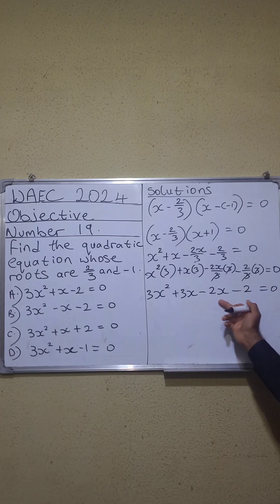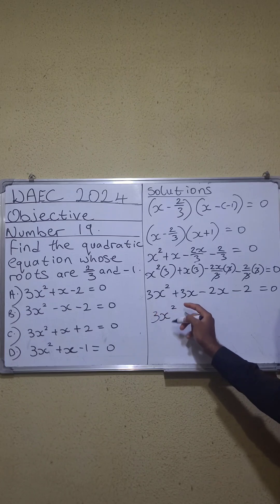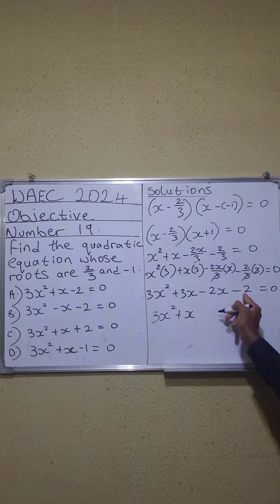Now we have a common expression here and we can easily simplify. This remains the same. 3x squared plus 3x minus 2x will give you plus x. Bring down your minus 2 and equals to 0.